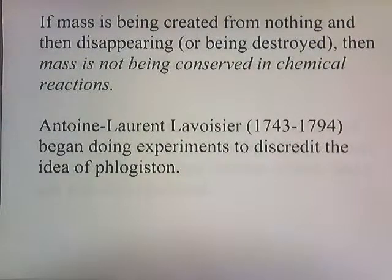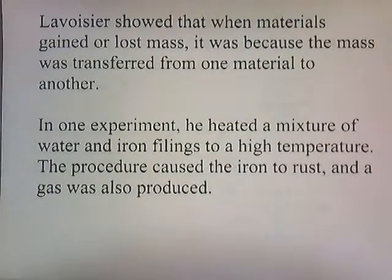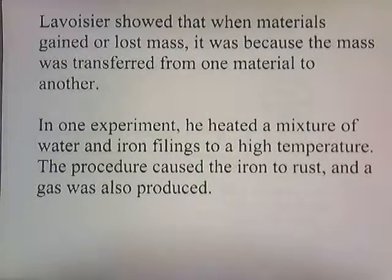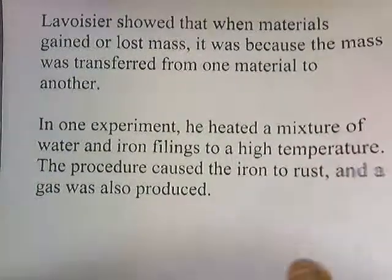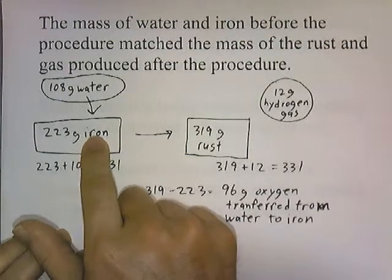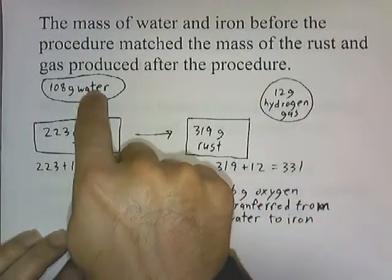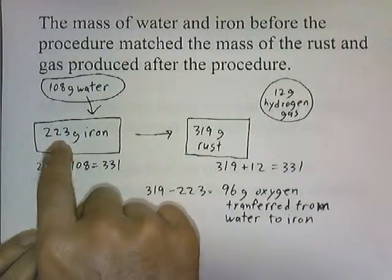Along comes a scientist by the name of Antoine Laurent Lavoisier in the late 18th century. He began doing experiments to discredit the idea of phlogiston. Lavoisier showed that when materials gained or lost mass, it was because the mass was transferred from one material to another. In one experiment, he heated a mixture of water and iron filings to a high temperature. The procedure caused the iron to rust and a gas was also produced. He took some iron, heated it up, and blew some steam over it — the mass of water was 108 grams and the amount of iron he started with was 223 grams.